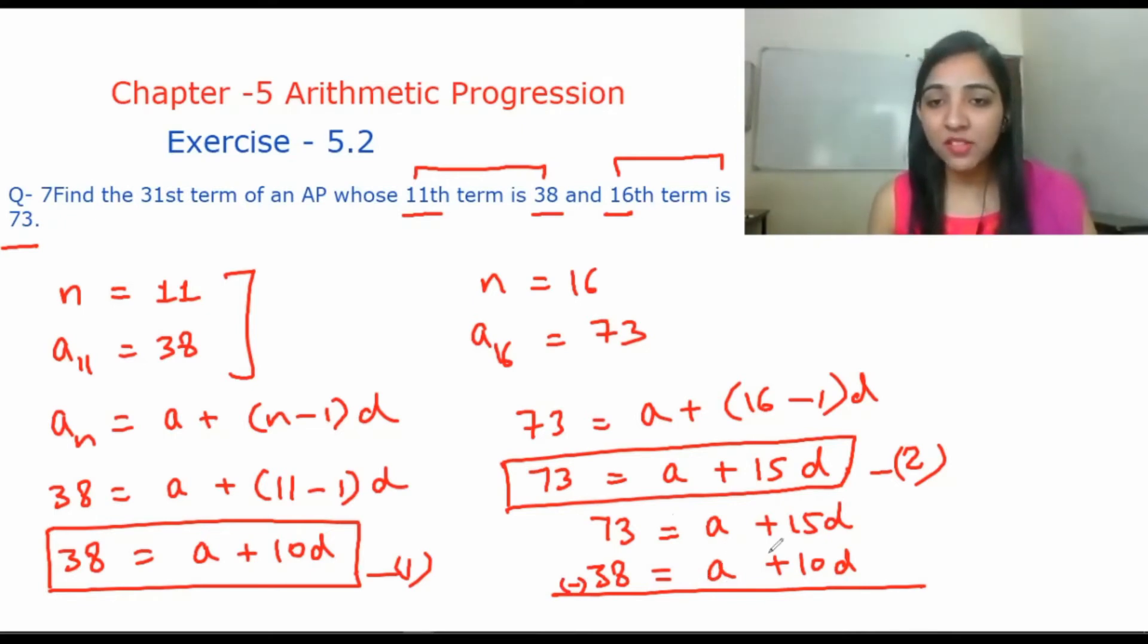The negative sign will change all the signs. So a will become minus a, this will be plus 15d, and this will be minus 10d. From 73 minus 38, I have 35. And a will be canceled with minus a, and here 15d minus 10d gives 5d.